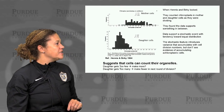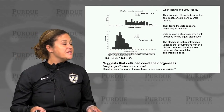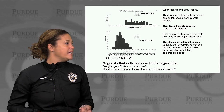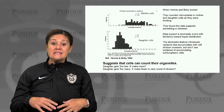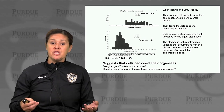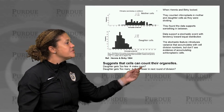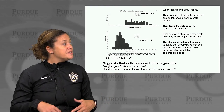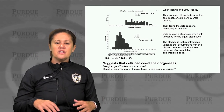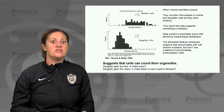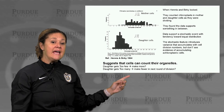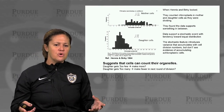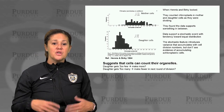Researchers Henness and Berkey asked this question by counting chloroplasts in mother and daughter cells during division in algae. They found that the data supported something in between: a stochastic event with a tendency towards equal distribution — more equal than predicted from a totally random event. The stochastic feature introduces some variance that can accumulate with cell division numbers, but you don't see evidence of accumulating achloroplastic cells — cells arising with no chloroplasts — suggesting that cells can somehow control and prevent this outcome.